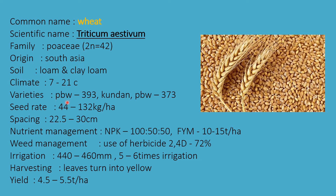The varieties are PBW 393, Kundan, and PBW 373. The seed rate required is 44 to 132 kg per hectare. Wheat is mainly grown by the broadcasting method. The spacing is 22.5 × 30 cm from plant to plant and row to row. The nutrient management for wheat is NPK 100:50:50.